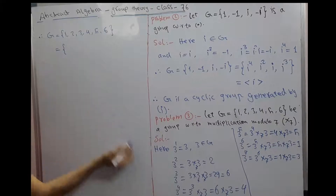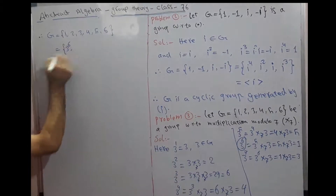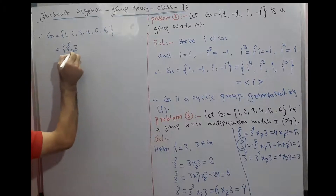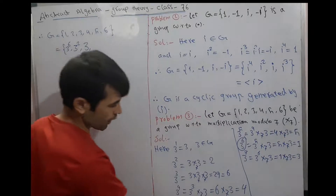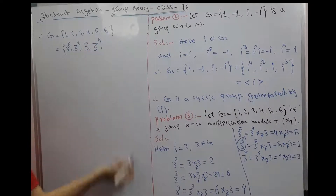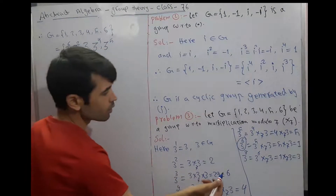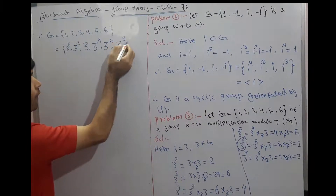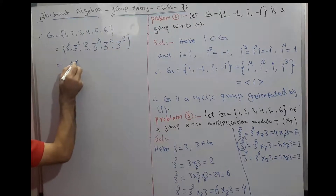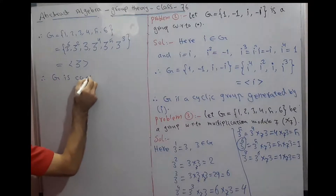Therefore G = {1, 2, 3, 4, 5, 6}. We can write: 1 = 3^6, 2 = 3^2, 3 = 3^1, 4 = 3^4, 5 = 3^5, 6 = 3^3. So every element can be expressed as a power of 3. Therefore G is a cyclic group generated by element 3.